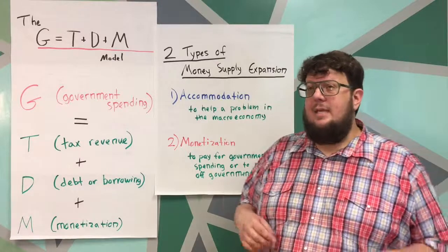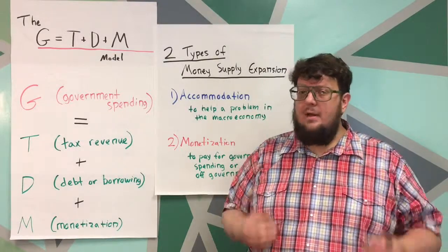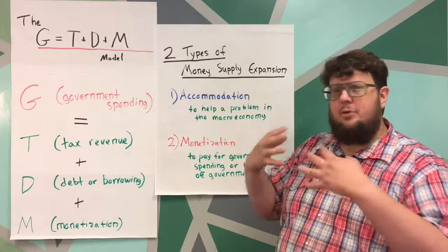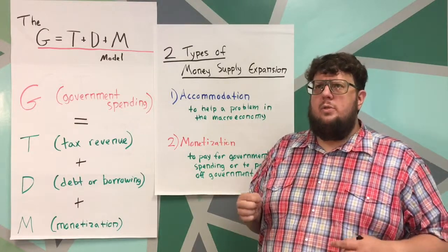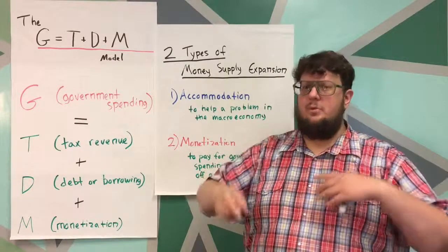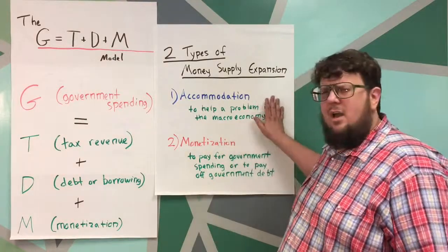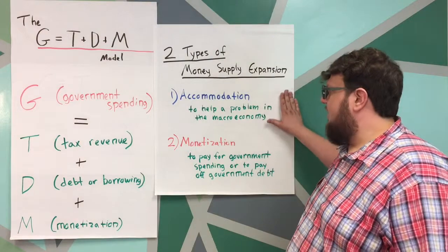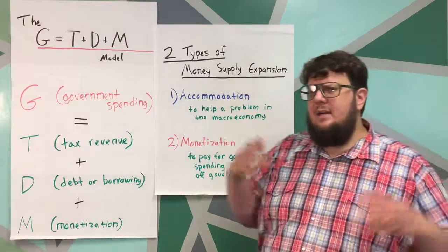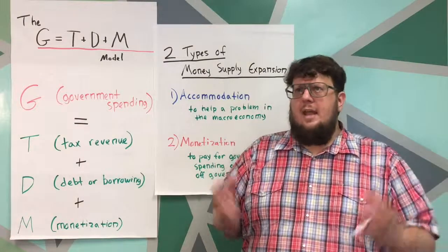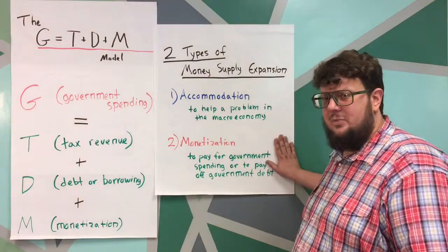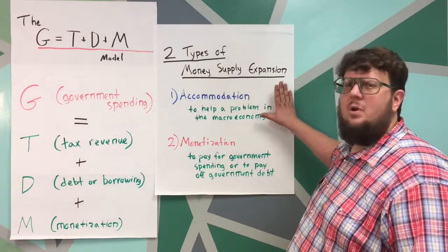If your government is known for keeping a stable monetary policy and they're simply expanding the money supply to keep credit from locking up, or to loosen up the economy a bit — just pushing money in to keep trade flowing appropriately — that's not going to cause inflation. So don't get confused if you hear the government has expanded the money supply a lot and you're worried about inflation. You have to think: is the government using it to pay for spending, or is the government using it to accommodate a problem?